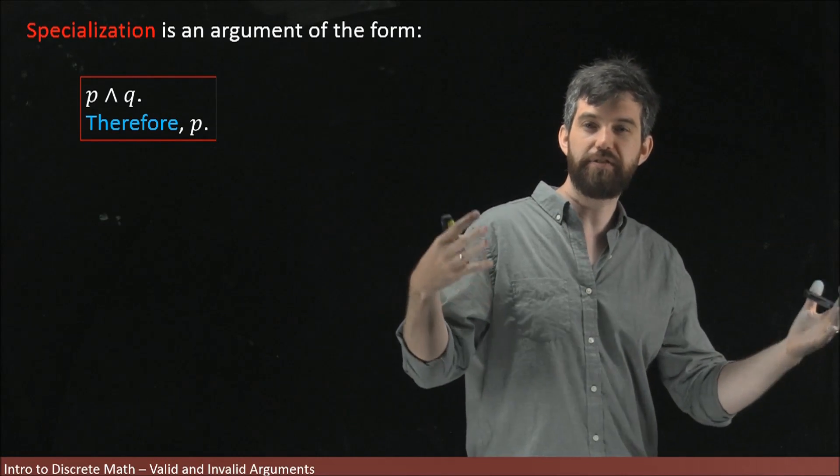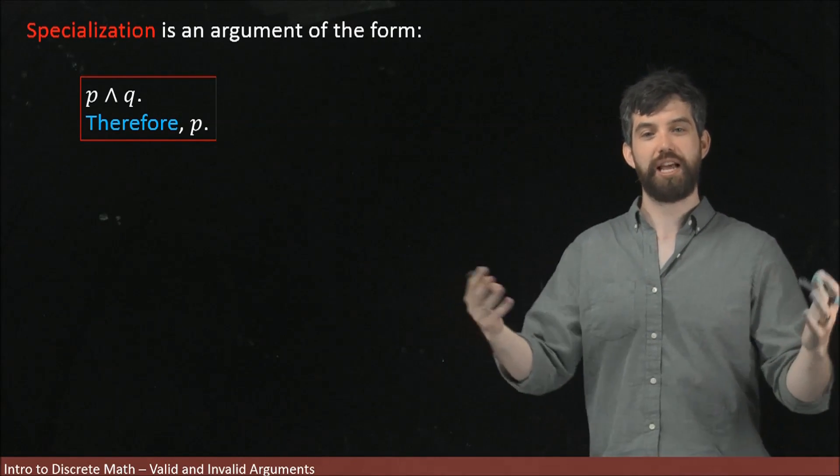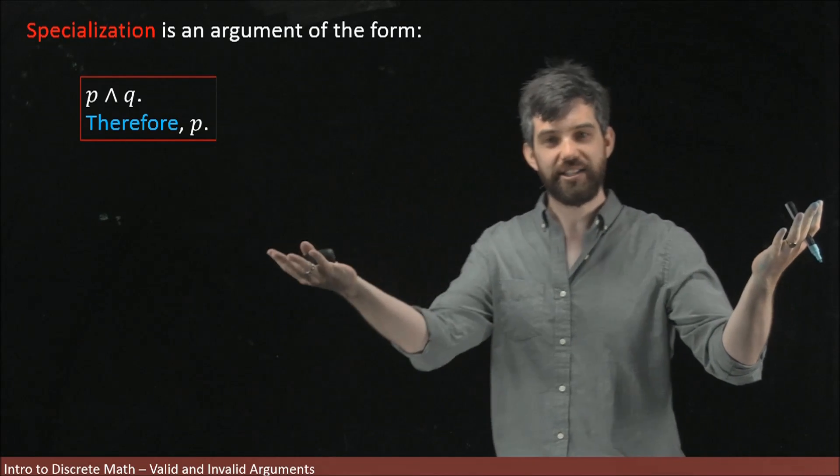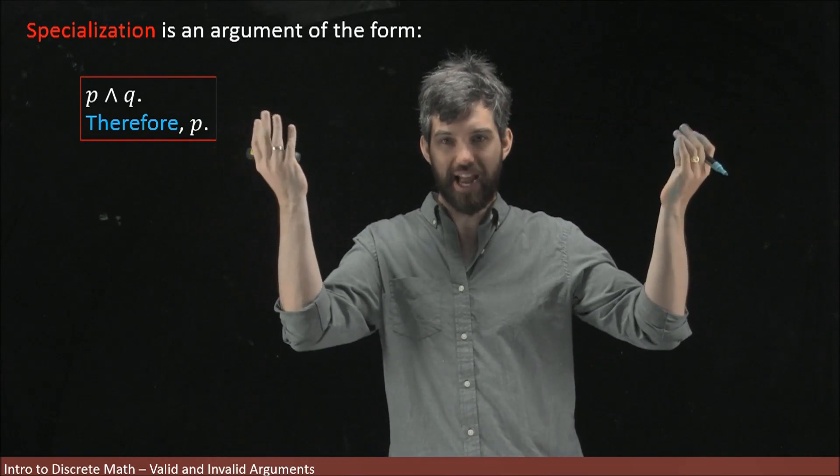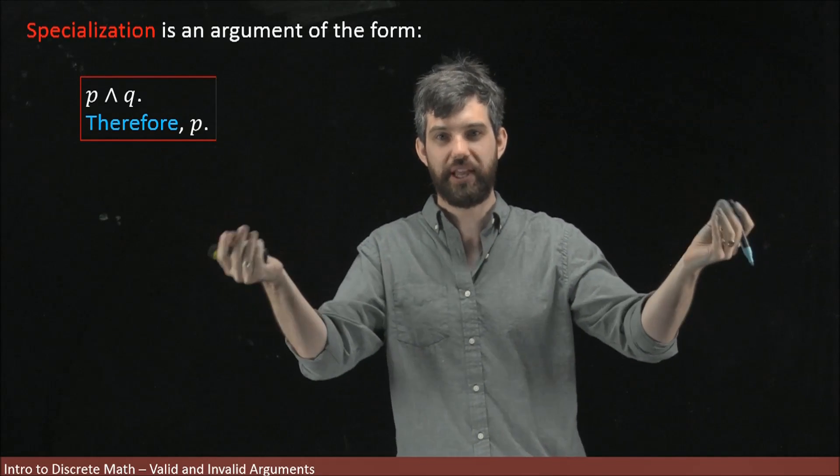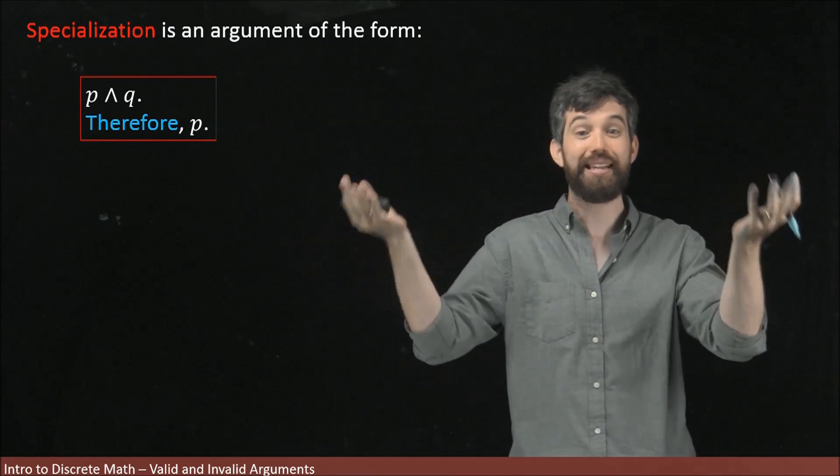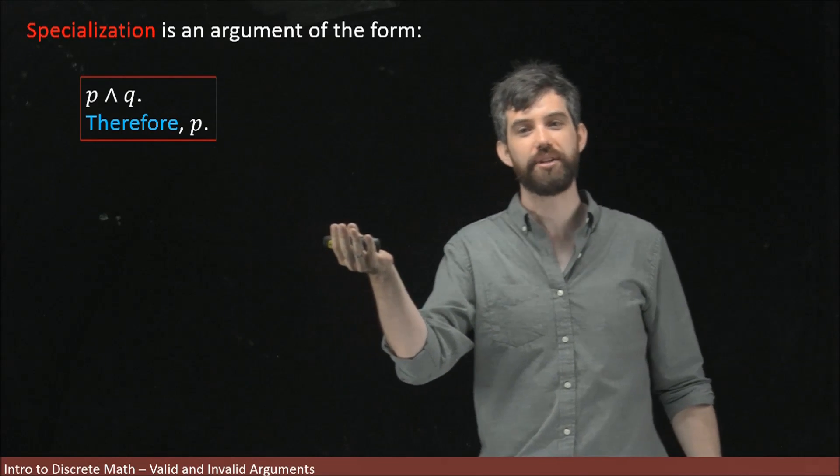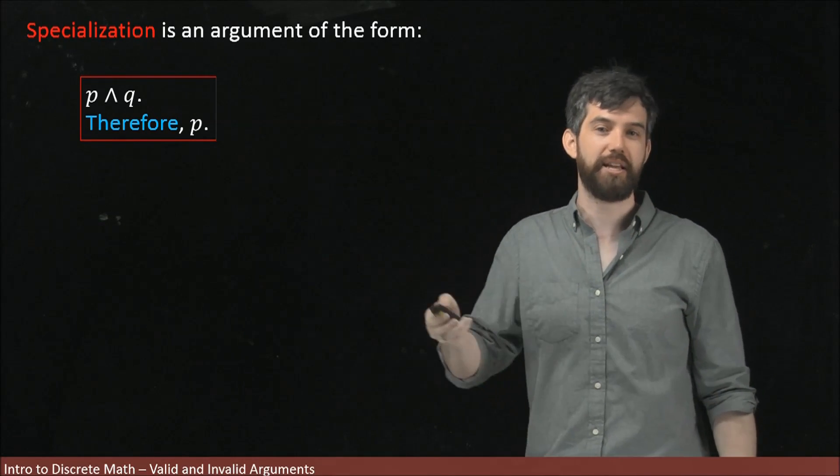Sort of the opposite of generalization is specialization. If I have one statement and some other statement, in other words, I have both of the statements true at the same time, I might not care about both of them equally. I have both of them, but I don't need both of them. I only care about one of them. I can just get rid of the one I don't care about, and I'm left with just P.